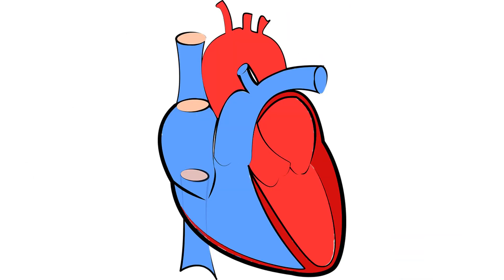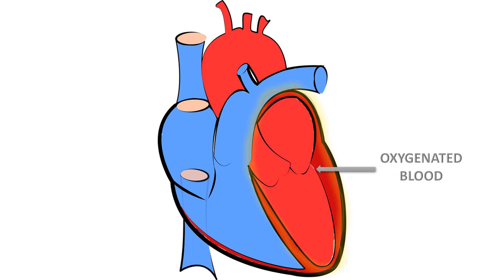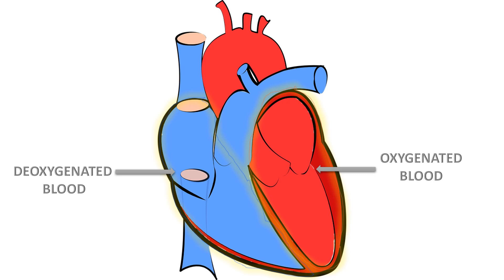The heart can be divided into two parts. The left side of the heart, shown here in red, deals with oxygenated blood, which contains more oxygen and less carbon dioxide. The right part of the heart, shown here in blue, deals with deoxygenated blood, which contains comparatively more carbon dioxide and less oxygen.